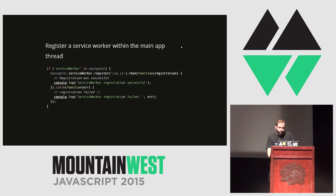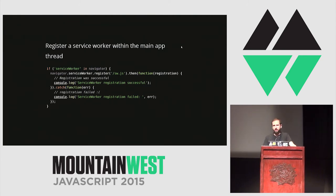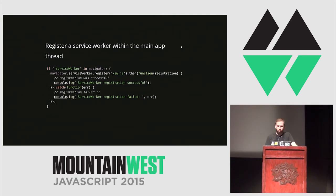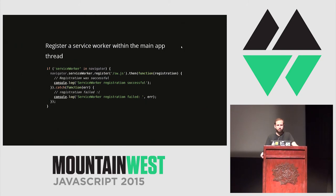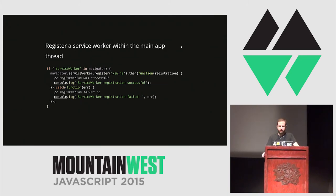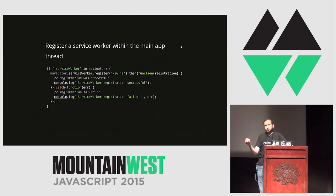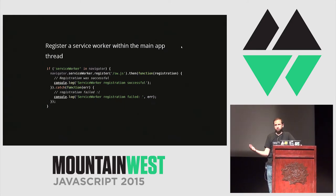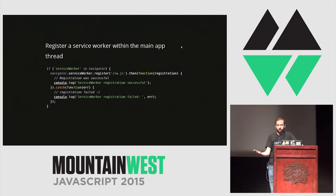I want to show a couple of examples. This code exists inside your main index HTML page — inside the main thread where we are registering a service worker, registering it to a particular path of a JavaScript file. If it succeeds, we'll find out. If it fails, we'll find out and print the error message. The error messages are not always helpful — sometimes your service worker will just not boot up, it will not install and you have no idea why. It's kind of hard to debug.